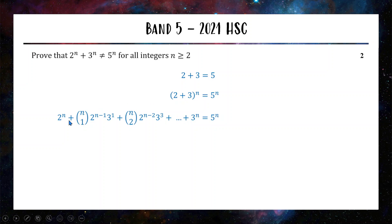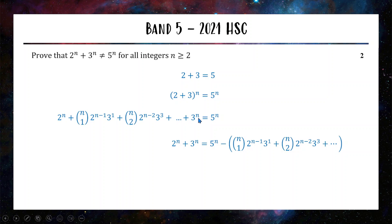Now we expand the left hand side using a binomial expansion. The first term is 2^n and the last term is 3^n, and everything in between is the rest of the binomial expansion — with coefficients calculated by combinations, the 2 stepping down in power and the 3 stepping up each time. All you need to show is that between 2^n and 3^n there's a binomial expansion with extra terms in the middle. Because n is greater than or equal to 2, this middle part is not going to be zero. That means 2^n + 3^n equals 5^n minus all the middle terms — which are not zero — so 2^n + 3^n is not equal to 5^n. Therefore we've shown this is true and got our 2 marks.